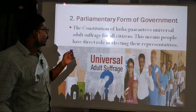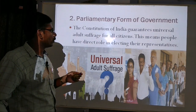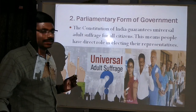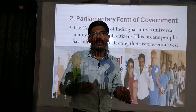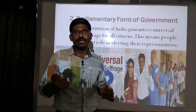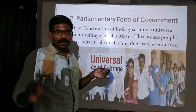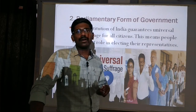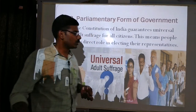The second key feature is the parliamentary form of government. The constitution of India guarantees universal adult suffrage for all citizens. This means people have a direct role in electing their representatives. We are a democratic country — the form of government which is directly elected by the people is called democracy. We are the largest democratic country in the world. The people of India directly elect their representatives, and we have the right to express our opinion. That is one of the main features of the Indian constitution.